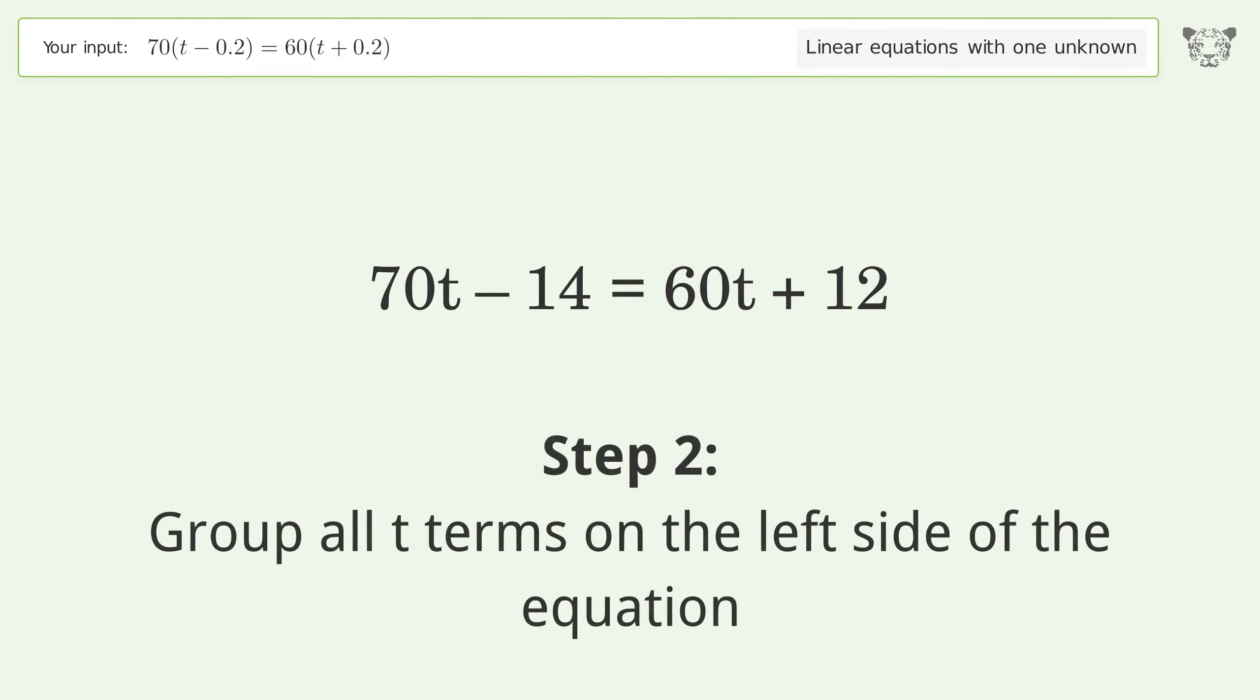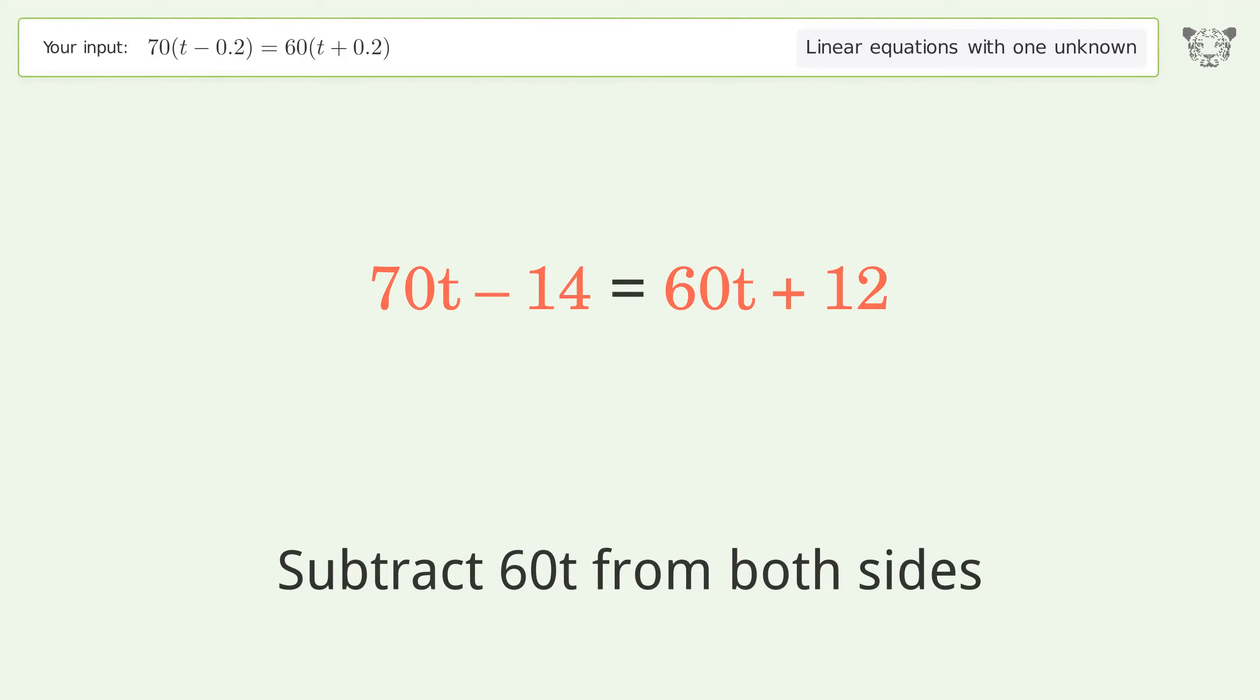Step 2: Group all t terms on the left side of the equation. Subtract 60t from both sides.